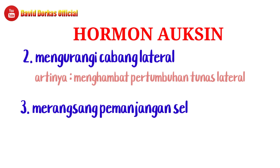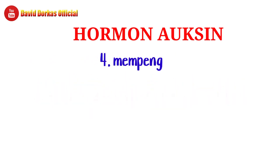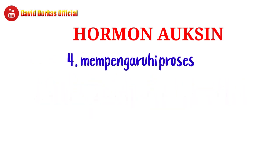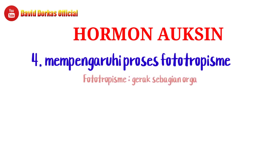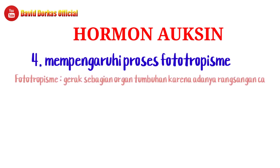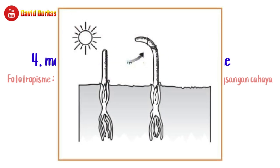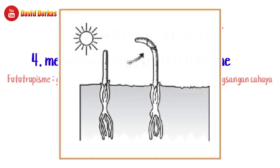Yang ketiga, fungsinya merangsang pemanjangan sel — itu adalah fungsi hormon yang umum. Nomor empat, mempengaruhi proses fototropisme. Fototropisme adalah gerak sebagian organ tumbuhan karena adanya rangsangan cahaya, seperti yang terlihat pada gambar di mana tumbuhan bergerak membelok ke arah cahaya.